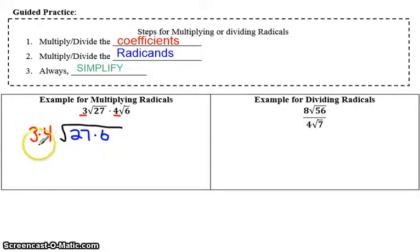Okay, so after we multiplied, now we're going to look at 3 times 4. 3 times 4 is 12. Keep our radical sign and do 27 times 6. 27 times 6 is 162.